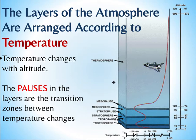In between layers, where the temperature transition switches from increasing to decreasing, are the pauses. Between the troposphere and the stratosphere, you have the tropopause. Between the stratosphere and the mesosphere, you have the stratopause, and so on. These are the areas where the temperature change is paused — it's not increasing or decreasing, but switching direction.